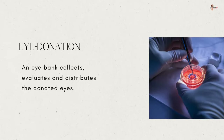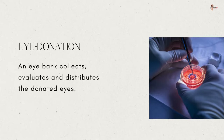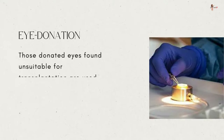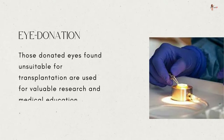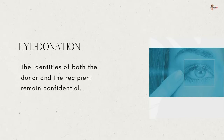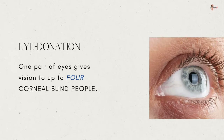An eye bank collects, evaluates, and distributes donated eyes. All donated eyes are evaluated using strict medical standards. Those found unsuitable for transplantation are used for valuable research and medical education. The identities of both the donor and the recipient remain confidential. One pair of eyes can give vision to up to four corneal blind people.